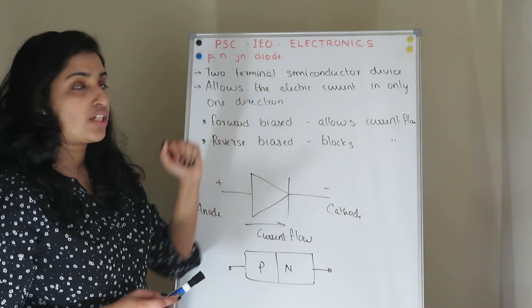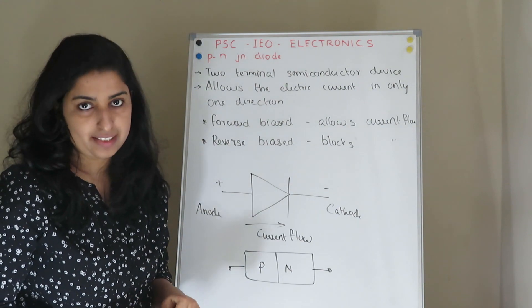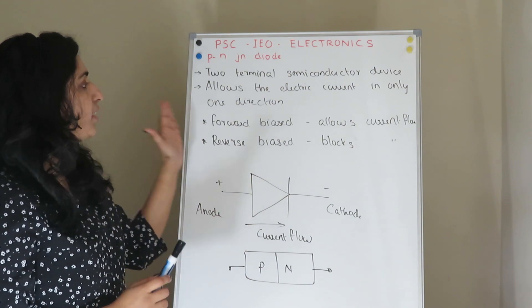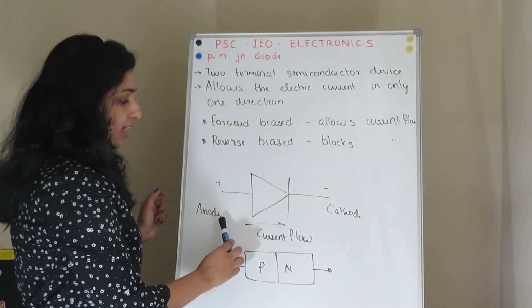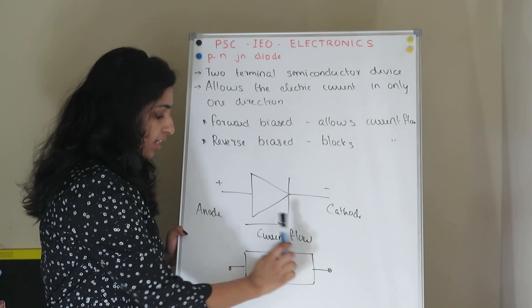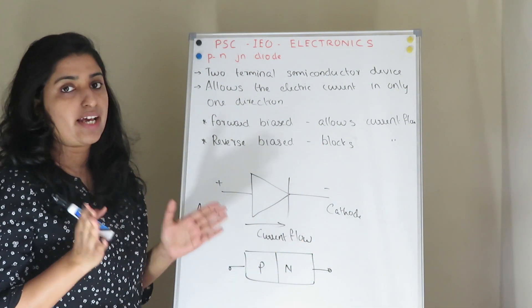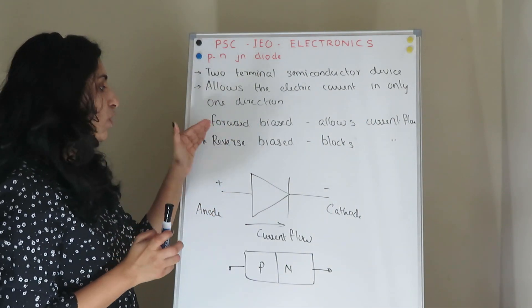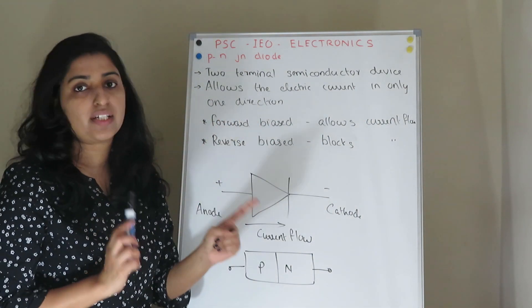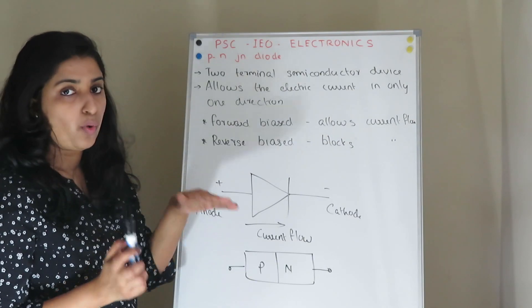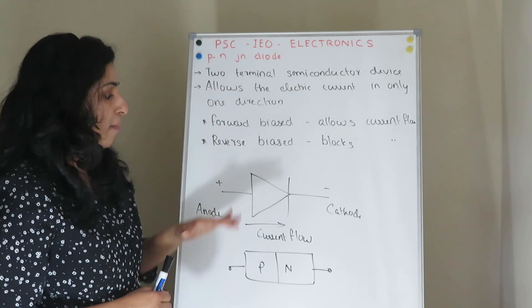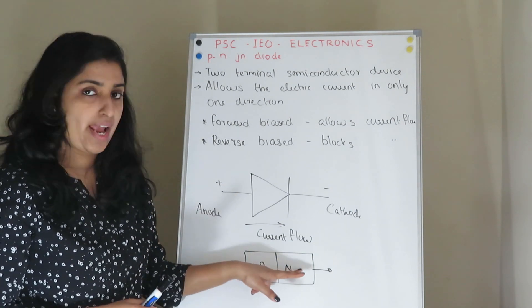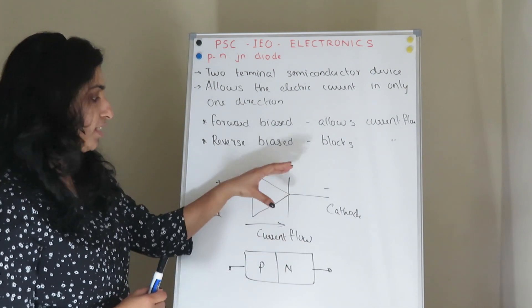PN Junction Diode is a two-terminal semiconductor device. It allows electric current in only one direction. For conventional current flow, it is anode to cathode. If you want current flow in one direction, that determines the biasing type — forward biasing or reverse biasing. For forward biasing, it allows the current flow; for reverse biasing, it blocks the current flow. The basic symbol consists of P-type and N-type, and this is the basic symbol of the PN Junction Diode.